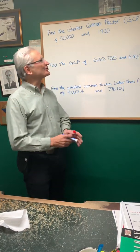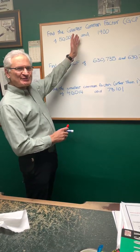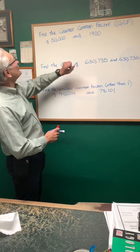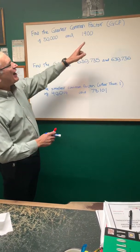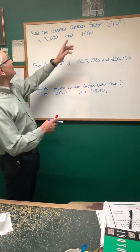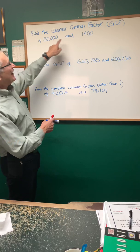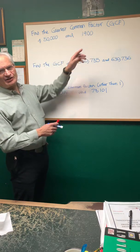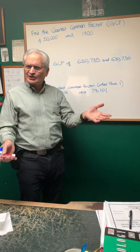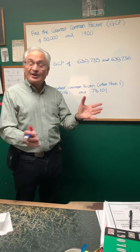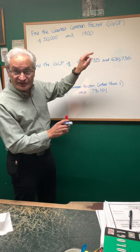Let's get into number theory now, just a little bit here. Here's the first problem. All these are related. Find the greatest common factor, GCF, of these two numbers, 50,000 and 1,900. What is the greatest common factor? It's the largest number that will divide into each of these.